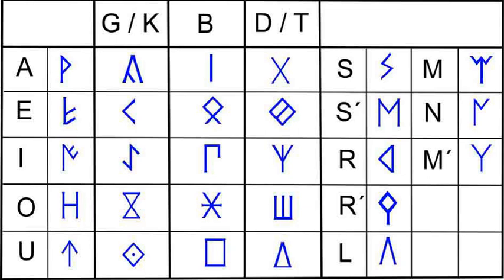The modern Bamum script is essentially CV-syllabic, but doesn't have enough glyphs for all the CV-syllables of the language. The rest are written by combining CV and V glyphs, making these effectively alphabetic.